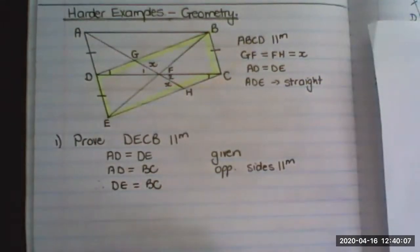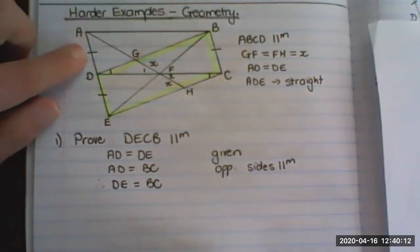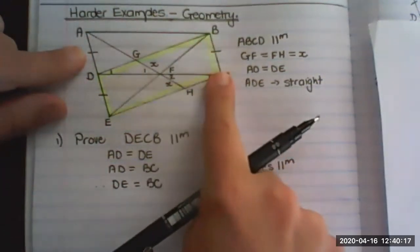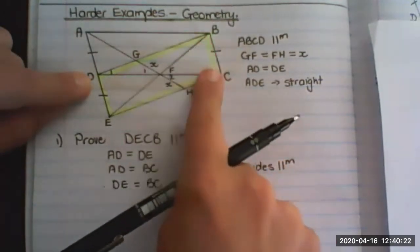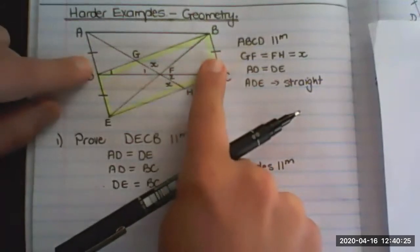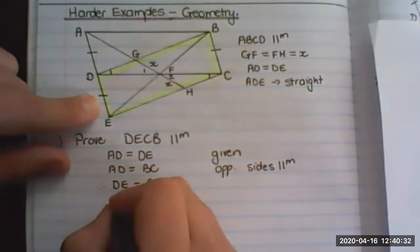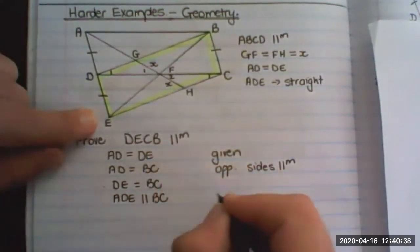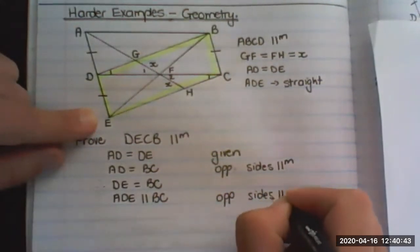Now we also have line AD parallel to BC because opposite sides of a parallelogram are parallel. But this is given as a straight line, so we can say that ADE is parallel to BC. The reason: opposite sides of a parallelogram are parallel.